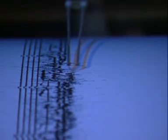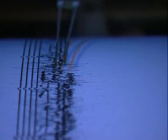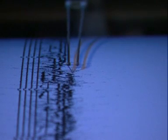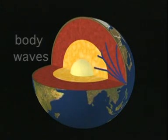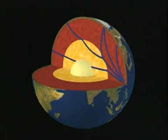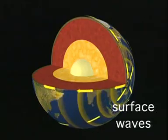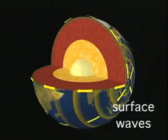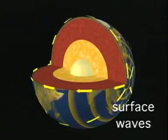There are two groups of waves. Body waves, which travel through the interior of the Earth. And surface waves, which move relatively slowly and only travel along the Earth's surface.